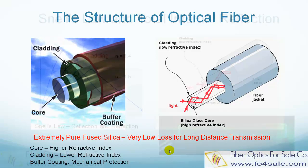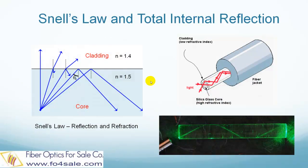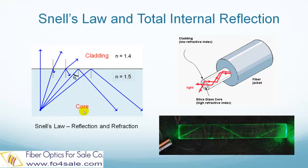Here comes the question, why doesn't the light leak out of the fiber? That is why we have to explain the phenomenon of total internal reflection. The left picture shows Snell's law, which guides how light travels at the interface of the core and cladding.